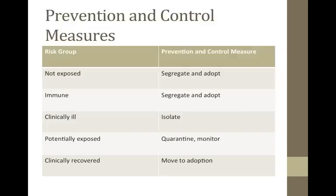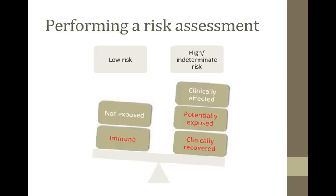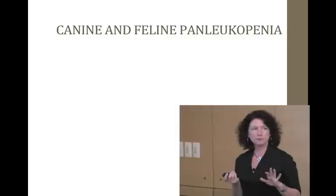Risk category determines what we do: not-exposed animals — move them along and adopt them out. Immune animals — get them on the adoption floor. Clinically ill — isolate in the isolation ward. Potentially exposed — quarantine and monitor to make sure they don't develop signs. Clinically recovered — move toward adoption. It sounds simple, but we struggle with who's actually immune for parvovirus and panleukopenia. We can make some judgment calls but we don't really know for sure, and that's what makes risk assessment challenging.